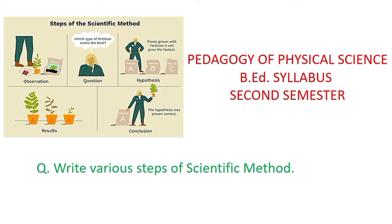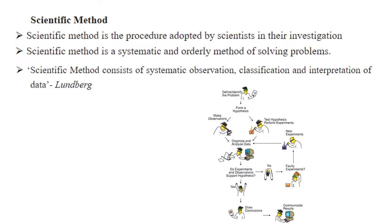Pedagogy of physical science, BA syllabus second semester. The question is: write various steps of scientific method. Now what is the meaning of scientific method? Scientific method is the procedure adopted by scientists in their investigation.